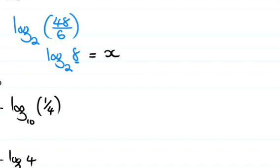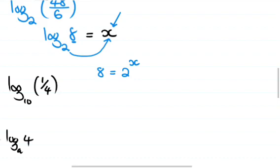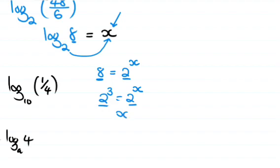You may also solve it by changing the logarithm to exponential form. With base 2 and the result, this is equal to 8 equals 2 to the power x. Writing 8 in terms of base 2 gives 2 to the power 3 equals 2 to the power x, so x equals 3.